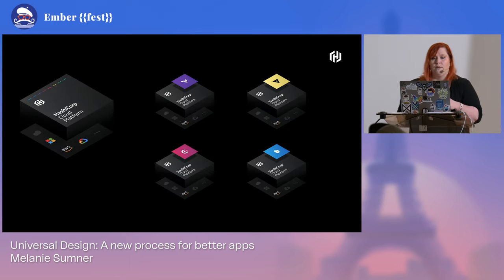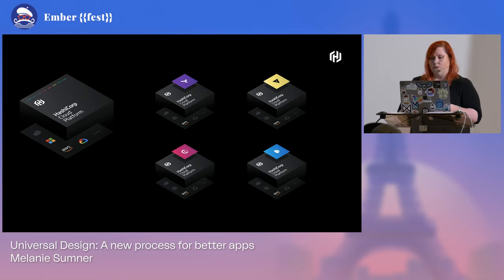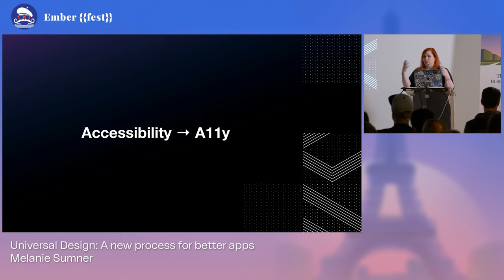We're working on unifying these products into the HashiCorp Cloud Platform. Our initial targets are Packer, Consul, Vault, and Terraform — making it easier to log into everything at once. All of our stuff is open source, so you can check it out on GitHub. We ship the UIs with the binaries, so you can actually go see how we build our Ember apps.